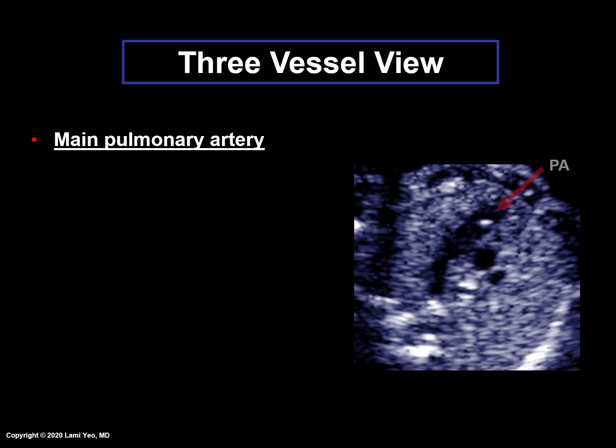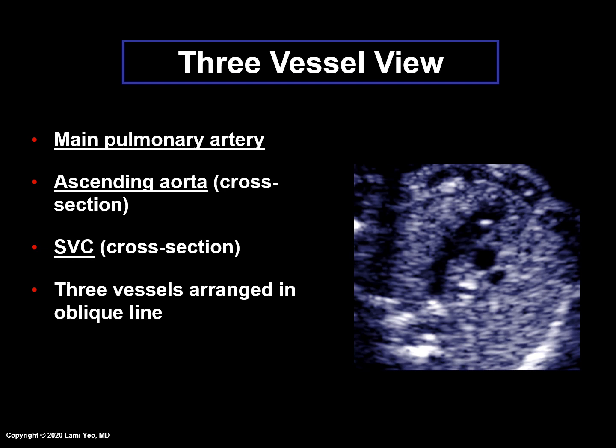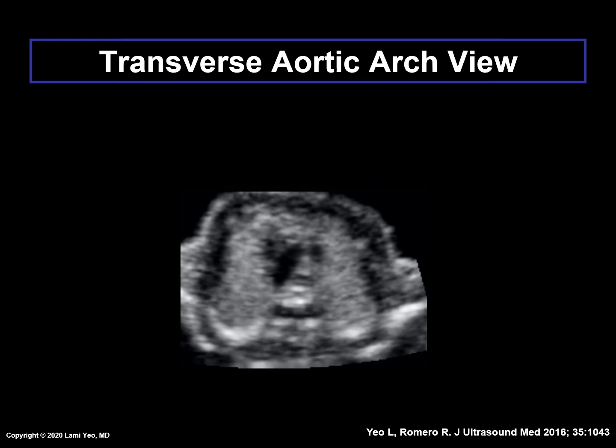Now in the three-vessel view, the main pulmonary artery, ascending aorta in cross-section, and the superior vena cava in cross-section are visualized, but not the transverse aortic arch. The three vessels are arranged in an oblique line, with the pulmonary artery being the most leftward anterior vessel, the superior vena cava being the most rightward posterior vessel, and the ascending aorta located in between. The relative diameters also decrease from left to right, with the pulmonary artery larger than the aorta, and the aorta larger than the superior vena cava.